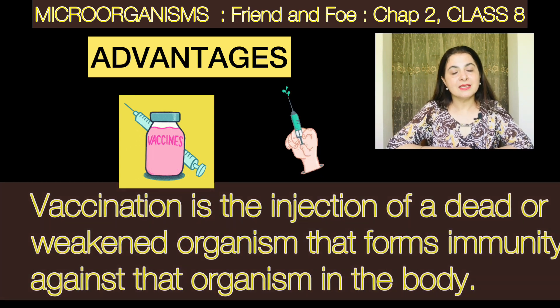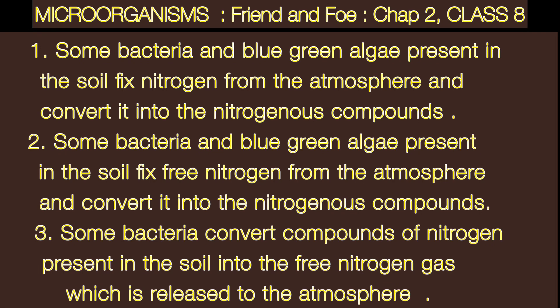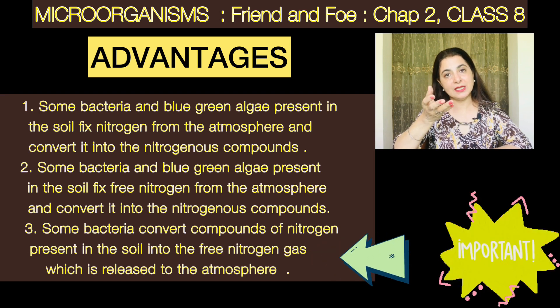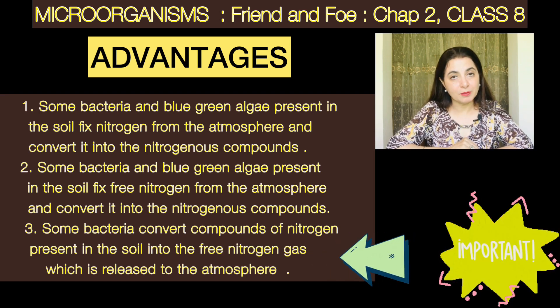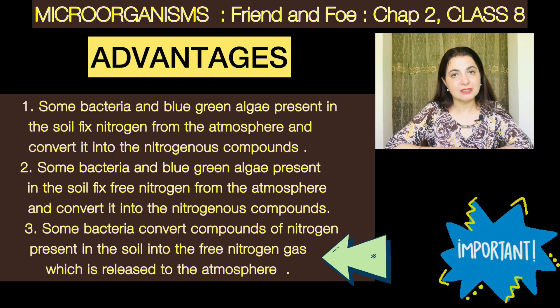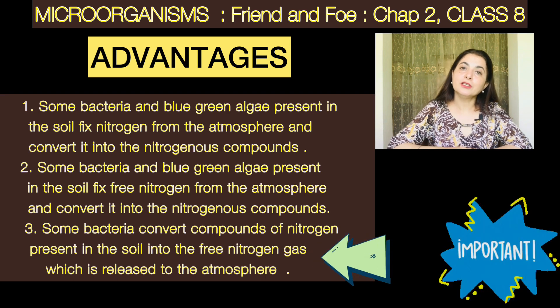Microorganisms also help us in increasing soil fertility. Leguminous plants contain a lot of protein. In the root nodules of these plants, there are some swellings called rhizobium. The free nitrogen is fixed and made available to the plants, which convert it further into nitrates and proteins that are used later.